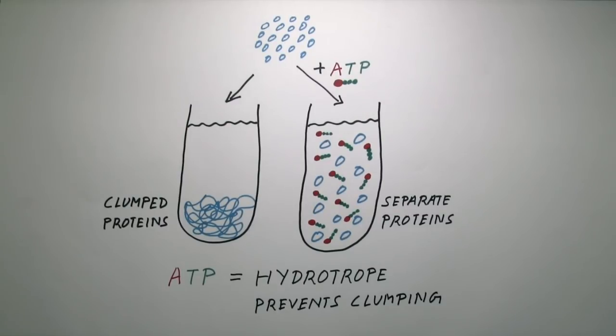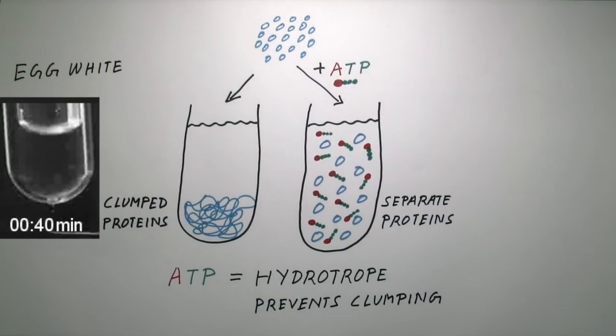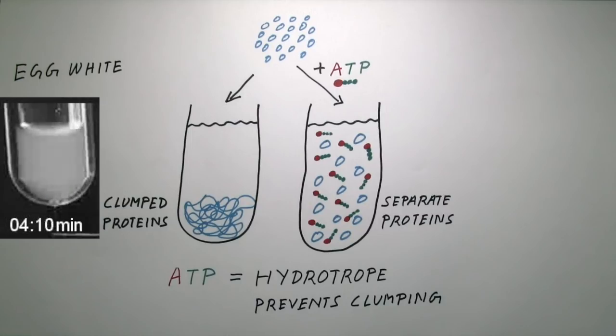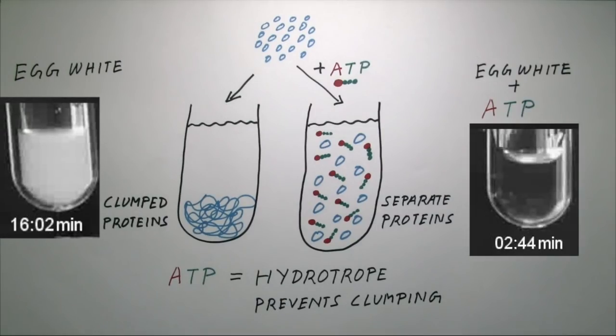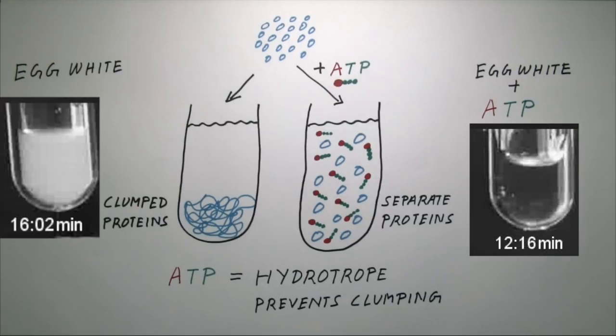One example we use comes from everyday life, the boiled egg. When boiling an egg, the proteins in a clear egg white clump together, giving it a white color. If we add ATP, we can delay or even prevent clumping of the egg protein and the egg white stays clear.